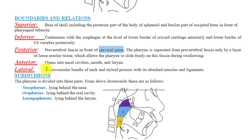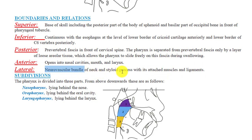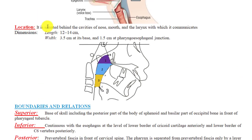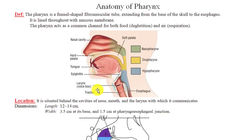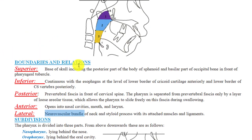The lateral boundaries on both sides contain the neurovascular bundle of the neck and the styloid process with its attached muscles and ligaments. These were all the boundaries of the pharynx — its location, dimensions, and relations.